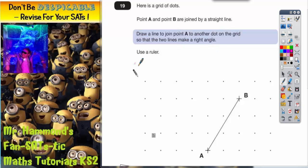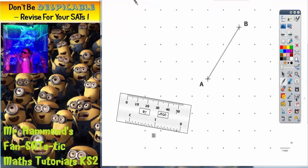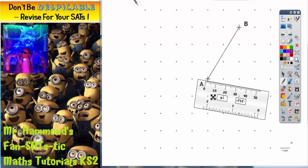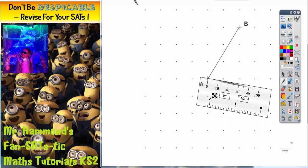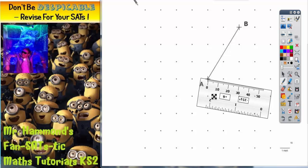It says use a ruler. So anybody that doesn't use a ruler is risking losing the mark straight away. So here's my ruler. The easiest thing to do is put the ruler so it is on point A like so, and then just experiment with rotating the ruler around until you get a right angle.